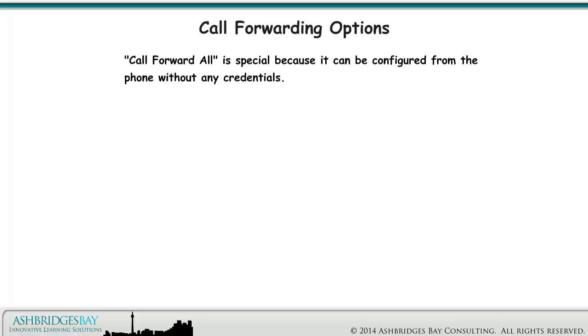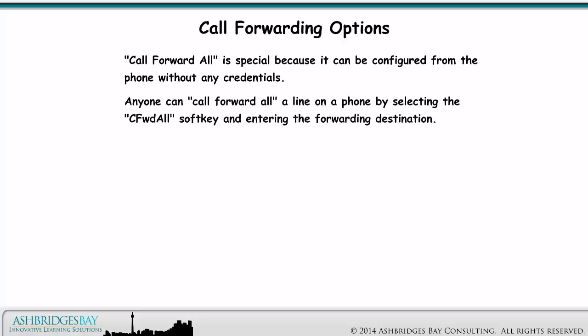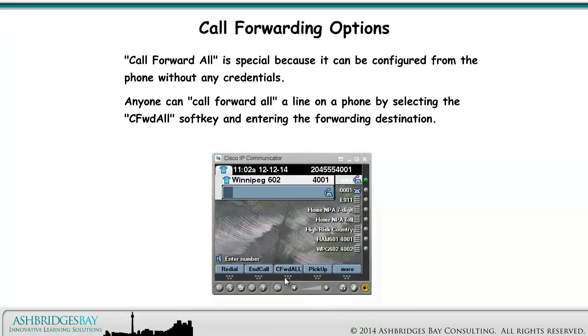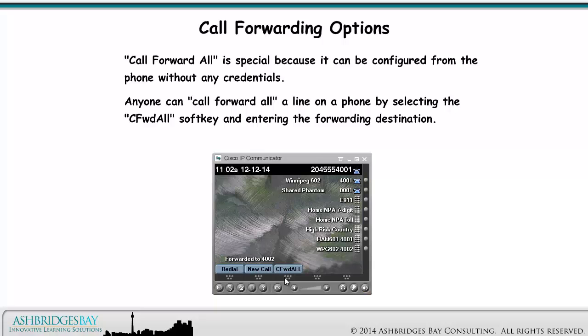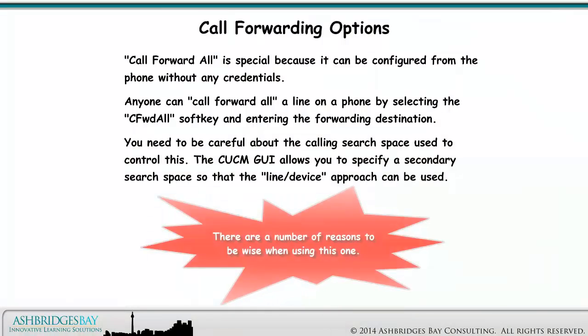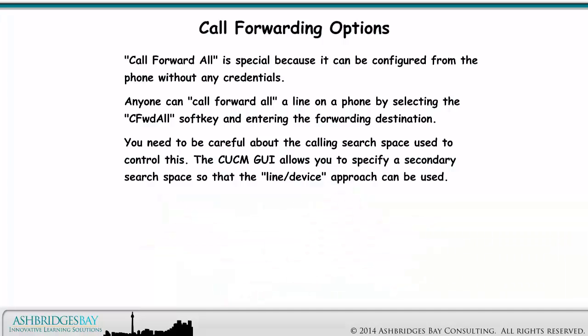Call forward all is special because it can be configured from the phone without any credentials. Anyone can call forward all a line on a phone by selecting the call forward all soft key and entering the forwarding destination. You need to be careful about the calling search space used to control this. CUCM GUI allows you to specify a secondary search space so that the line device approach can be used.